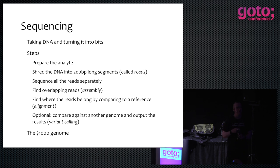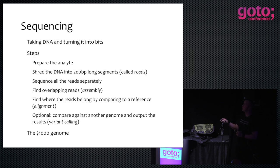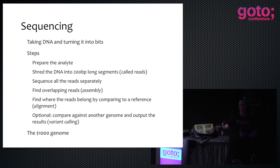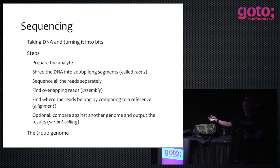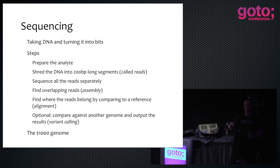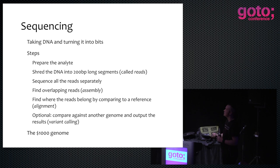Up until very recently, you needed supercomputers to do the alignment part of sequencing, so it was extremely expensive. Even now, big labs doing this take several days for alignment — because alignment is taking each one of those 200 base pair fragments, from a genome of 3 billion base pairs, and doing a fuzzy string search against the reference to figure out where each one should be. But out of it, we get a long sequence that hopefully matches more or less what the DNA for a specific individual is.